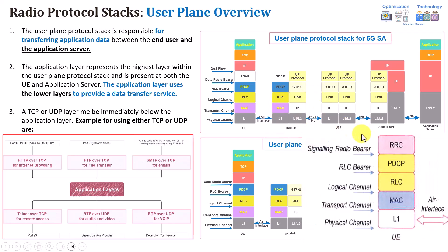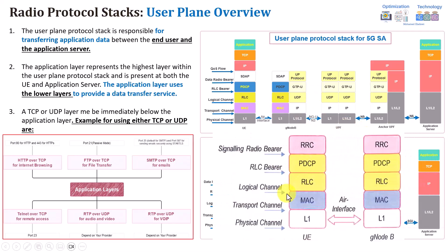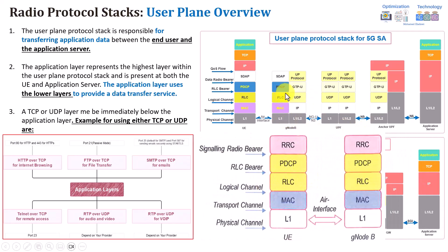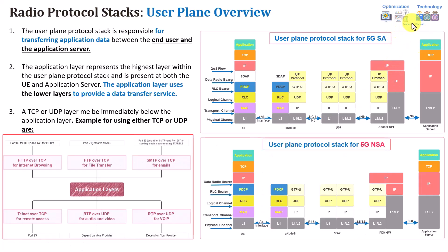This is the user plane. The control plane is simpler — on top of the PDCP, you will have the RRC layer. We also have the SDAP layer, which is used in 5G standalone only. We'll explain this in the next slide. The main difference is that instead of a user plane protocol, you'll be using RRC. Let's move now to the interesting part in the next slide.